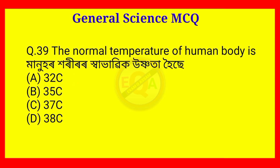Question number 39. The normal temperature of the human body is? The answer is Option C — 37 degrees centigrade.